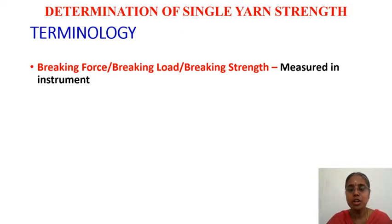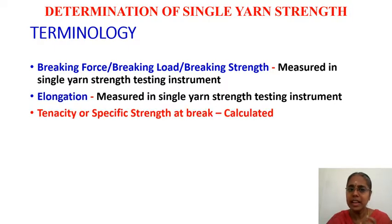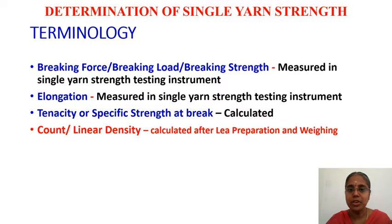Let us look into the various terminologies used in this experiment. The breaking force, breaking load, or breaking strength is a parameter measured in the instrument. The second is elongation, also measured in the single yarn strength instrument. Third is the calculated parameter — tenacity or specific stress at break. These are the three important terminologies, along with the count of yarn.